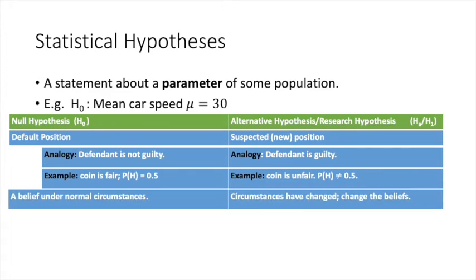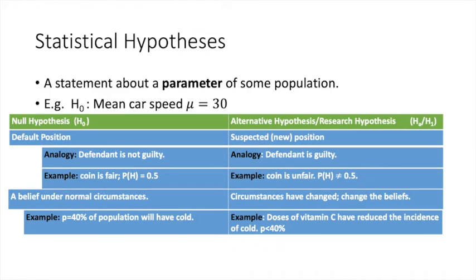Another view of the null hypothesis is that it shows the belief under normal circumstances, whereas the alternative hypothesis contends that circumstances have changed, because the sample data shows that. Hence, it is time to change the views. For example, normally 40% of population may have cold, but a drug company says that now that everyone has been administered vitamin C supplements, the incidence of flu must be less than 40%.